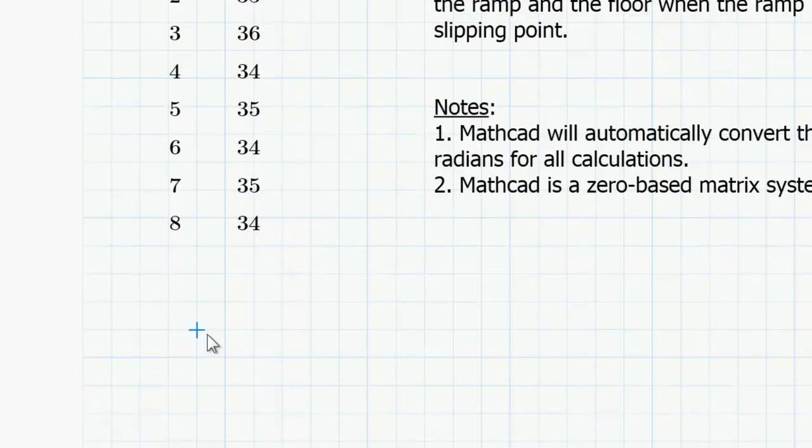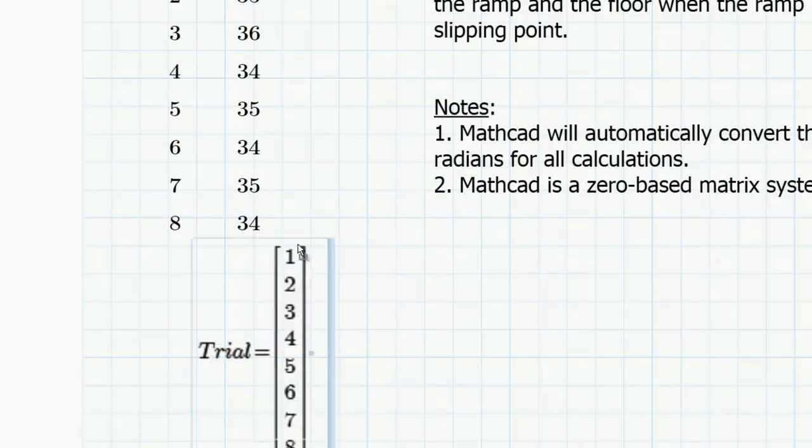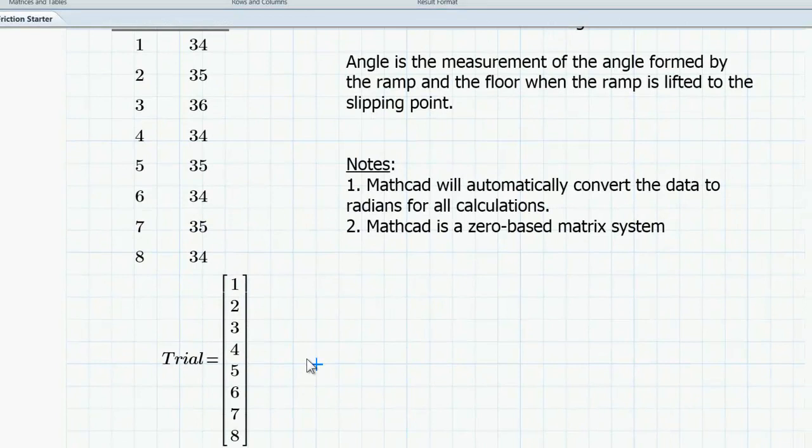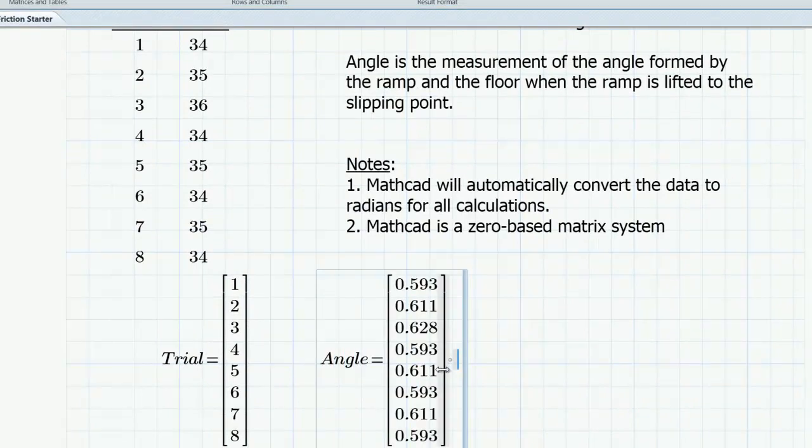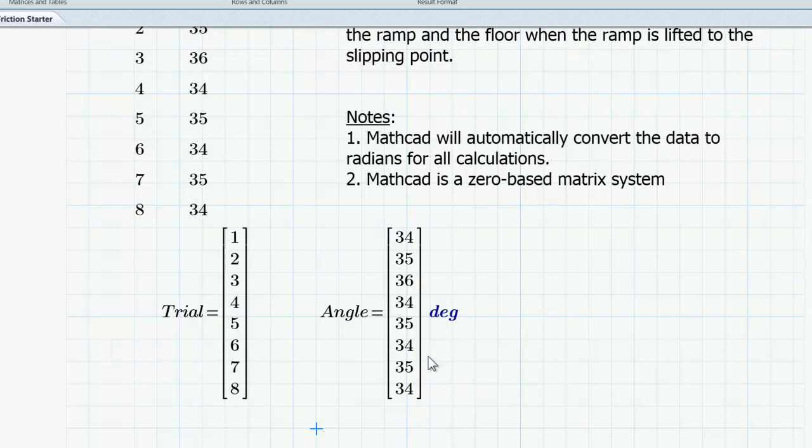And I can evaluate trial. And that will give me a vector with the values 1 through 8. And I can evaluate angle. That's actually going to report the results in radians, which is Mathcad's default unit. But you see a placeholder here to the right of the matrix. And I can click in that placeholder. I can type degrees. And it will convert the measurements back to degrees.